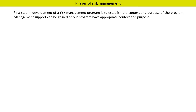The first step in development of a risk management program is to establish the context and purpose of the program. Management support can be gained only if the program has an appropriate context and purpose. Once the context and purpose is established, the risk management program needs to be implemented in the following four phases.